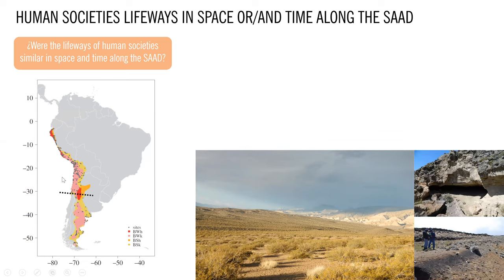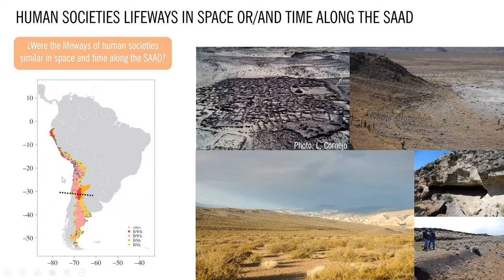On the contrary, north of 32 degrees south, human economies started to transition, increasingly incorporating horticulture and pastoralism from the mid-Holocene to the late Holocene, and land use became more extensive and intensive in the last 1,000 years.